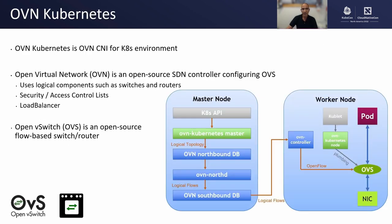The next CNI is OVN-Kubernetes. OVN-Kubernetes is the OVN CNI for Kubernetes environments. It uses OVN, Open Virtual Networking, which is an open source SDN controller that uses OVS. OVN uses logical components such as switches and routers. It has support for security and access control lists, load balancers, and many other features. OVN programs OVS as its data plane. For those not familiar with OVS, it is a virtual switch that is flow-based, meaning it can be programmed to implement most of the data plane elements of switches and routers.